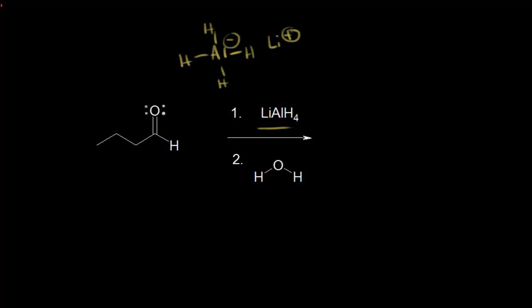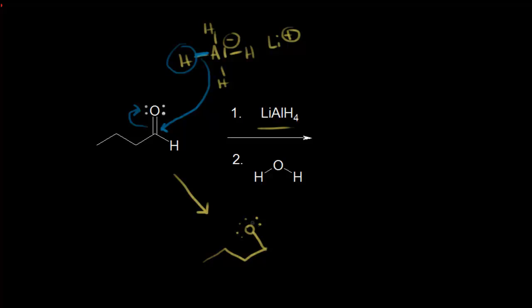These two electrons and this hydrogen are going to come along and attack here, pushing these electrons off onto the oxygen. This is definitely an oversimplified mechanism, but it's the easiest to think about. So now we would have our alkoxide over here on the left — a negative one formal charge on our oxygen — and over here on the right, we've added a hydride.